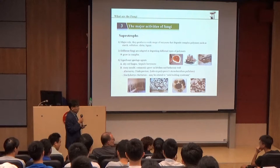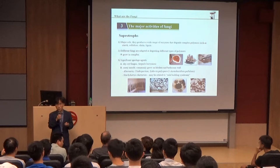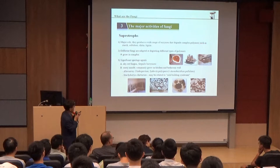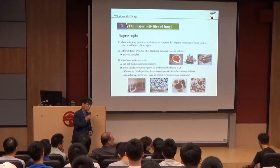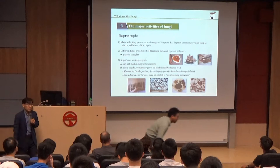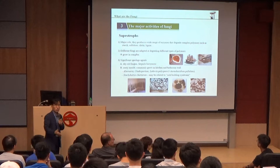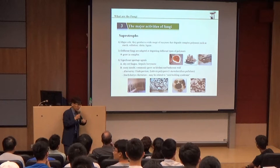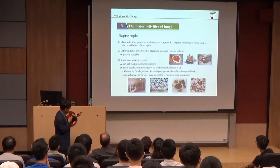We can divide fungi according to their nutrition mode. If a fungus takes nutrients from dead material, it is a saprotroph — they can degrade everything. They can get energy from dead animals, dead plants, even oil. They can degrade everything by enzyme. They have so many different kinds of enzymes, which means the application potential is a very nice resource.